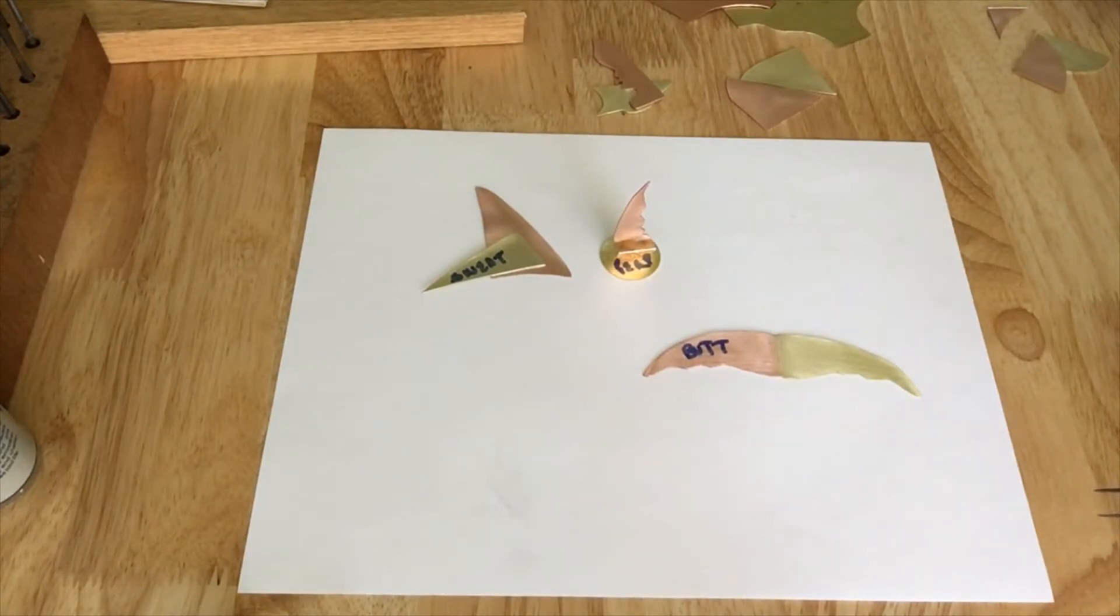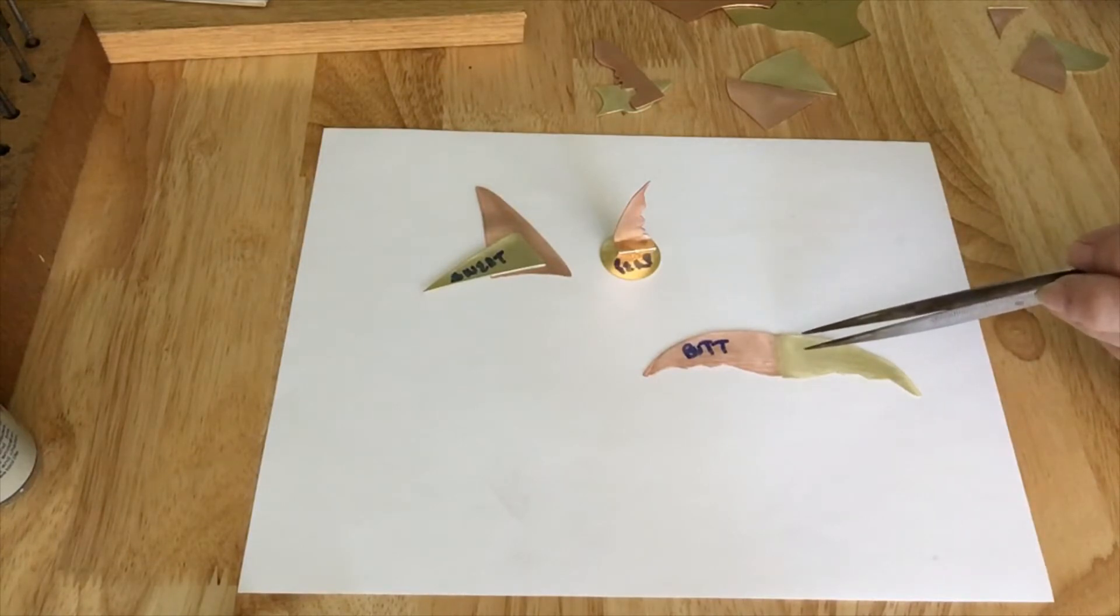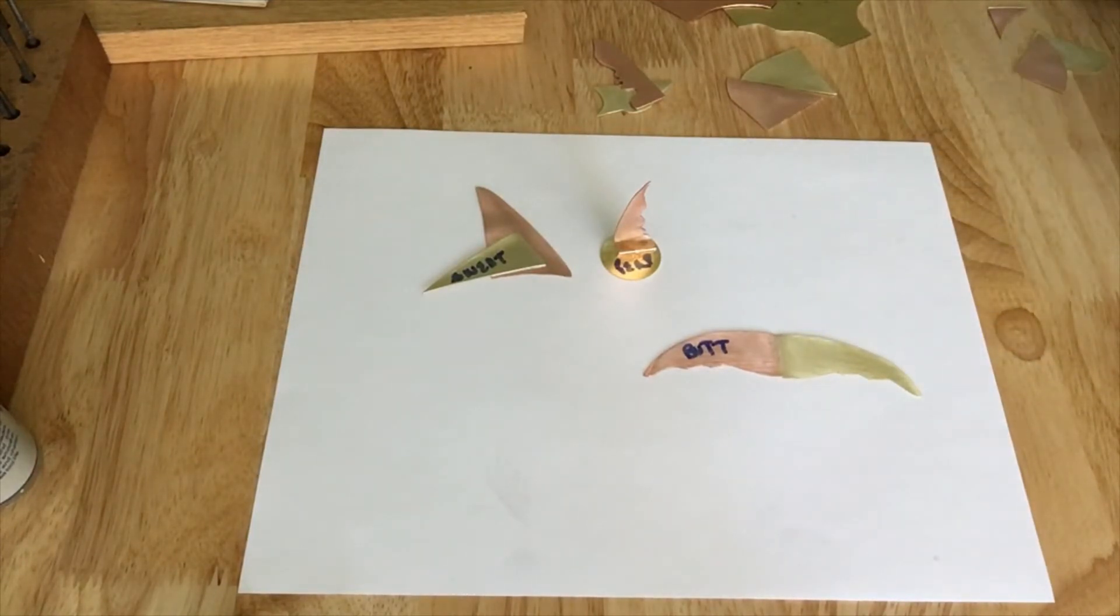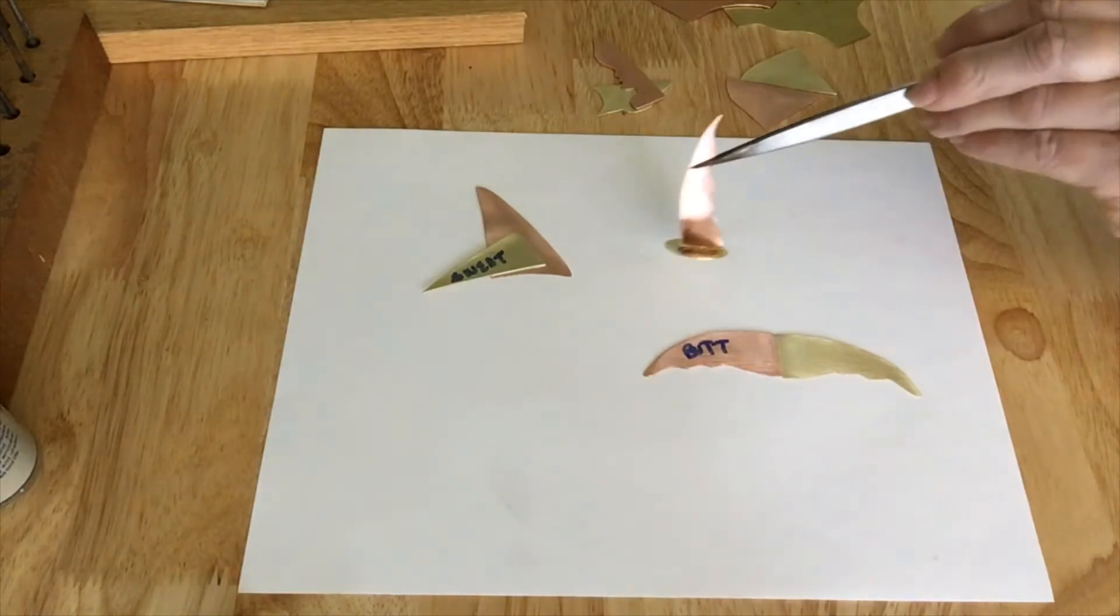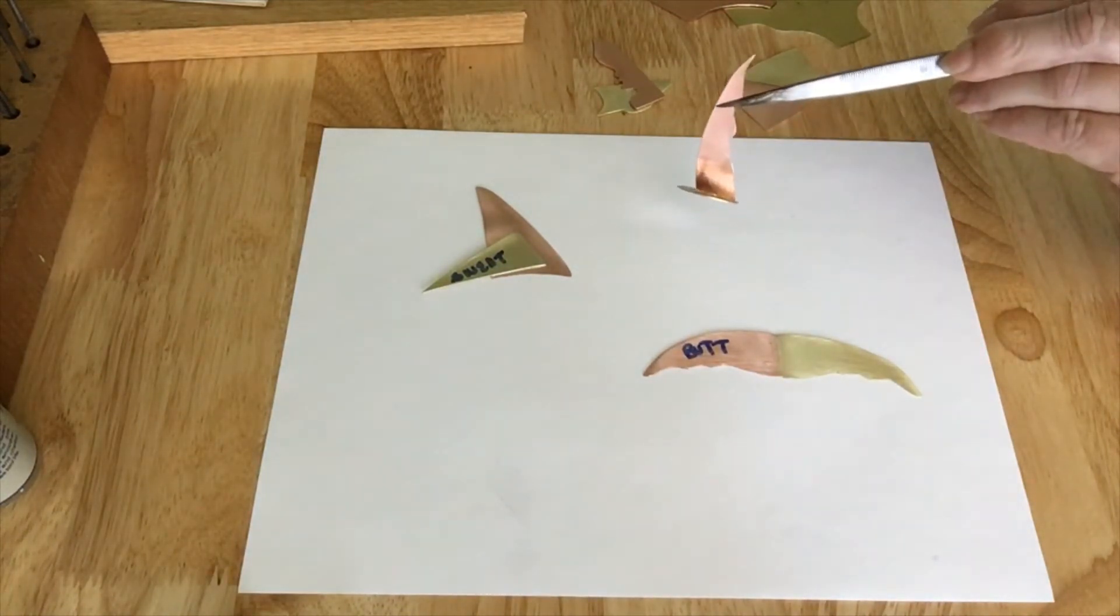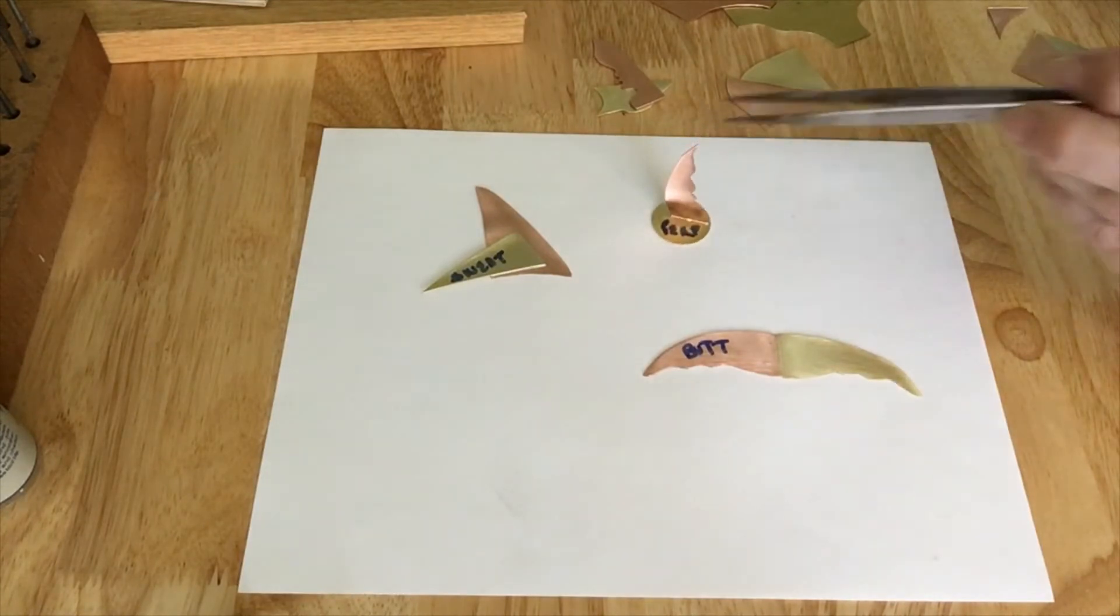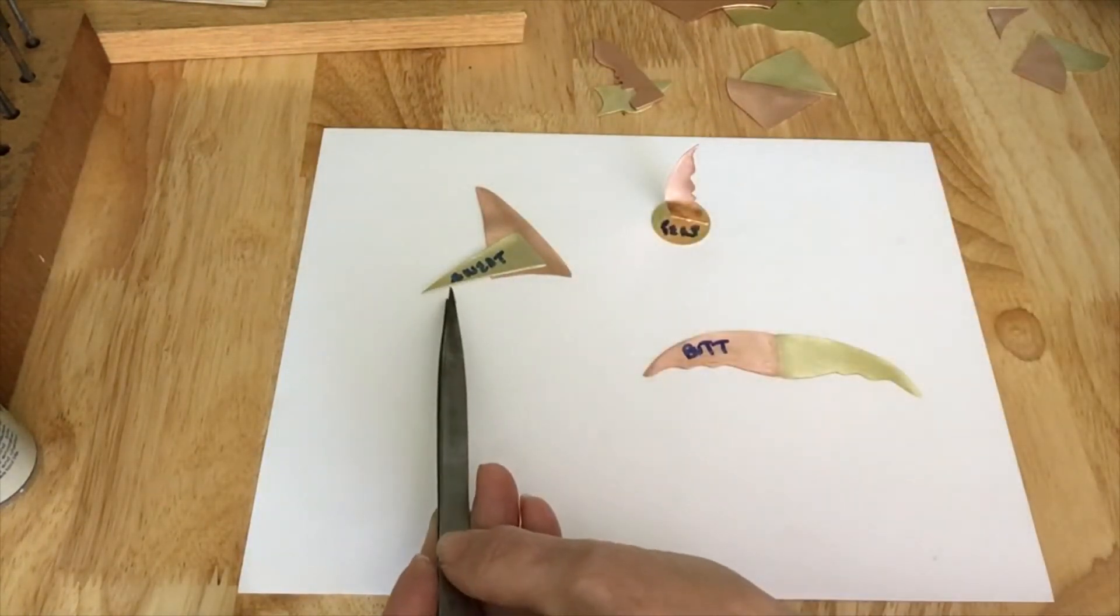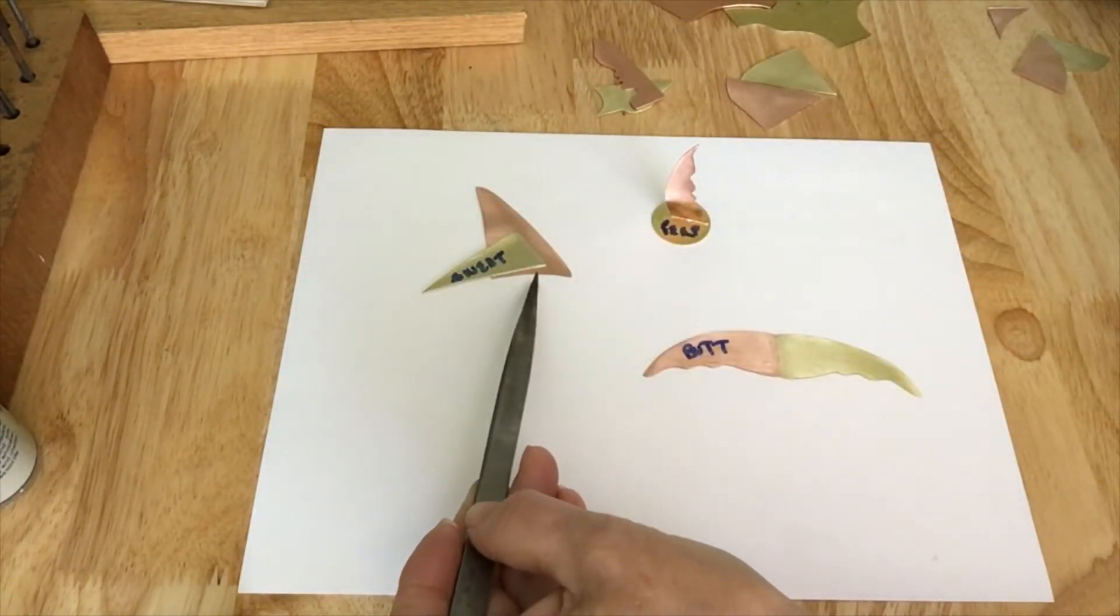The three basic solder joints are a butt solder, which is two pieces of metal butted edge to edge; a perpendicular solder joint, which is one piece of metal standing upright on top of another; and a sweat joint, which is one piece of metal soldered on top of the other.